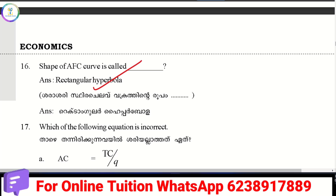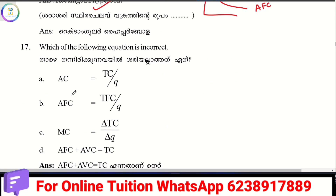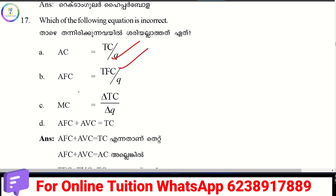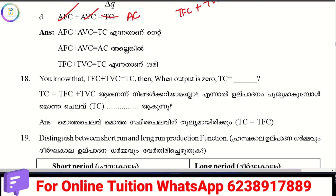The shape of the AFC curve is a rectangular hyperbola. AFC equals TFC by Q. MC equals delta TFC by delta Q. If AFC plus AVC equals AC, then TFC plus TVC equals TC. When output is 0, TVC is 0, so total cost equals total fixed cost.